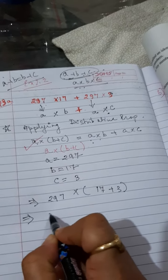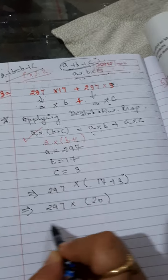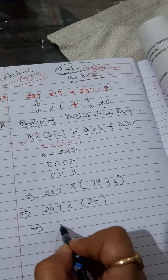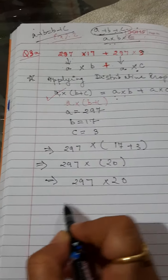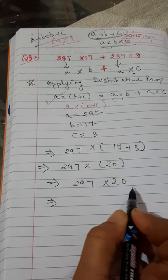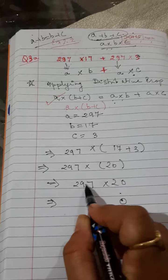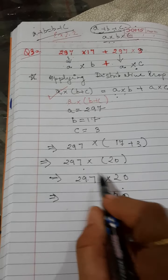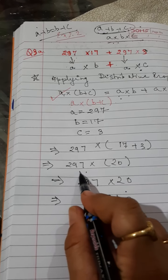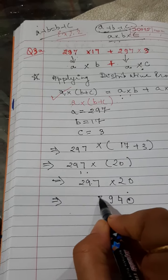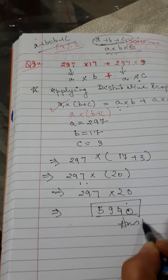Correct? So now you first add, it will be 20. Now, 297 into 20. So now you will get, this is a 0. Put it like this only. 2 7's are 14, 4 carry 1. 2 9's are 18 plus 1, 19, 9 carry 1. 2 2's are 4 plus 1, 5. So children, this will be our answer, 5940.